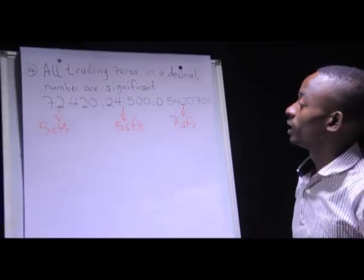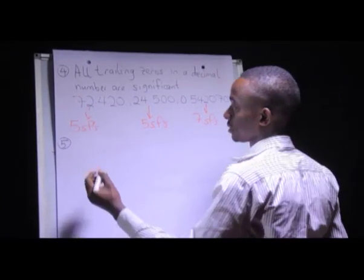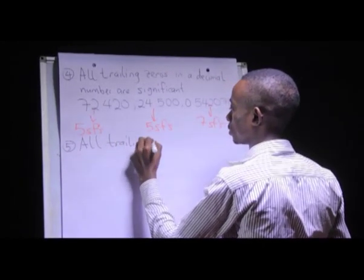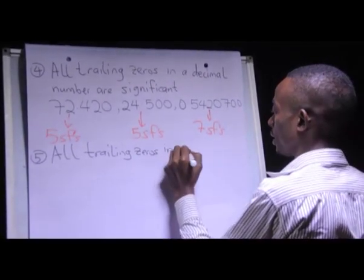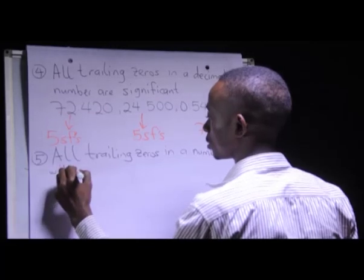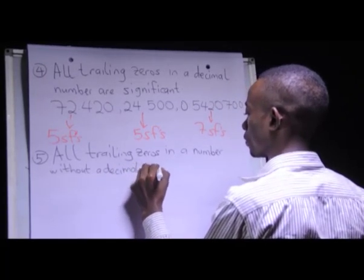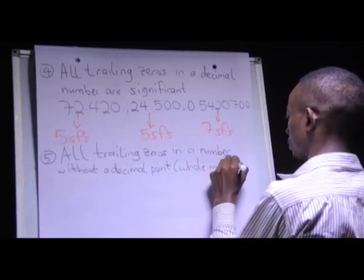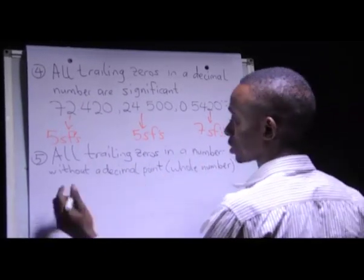That is condition four. Now lastly, condition five — it is somehow similar to condition four. It states that all trailing zeros in a number without a decimal point, in other words a whole number, are considered to be insignificant.